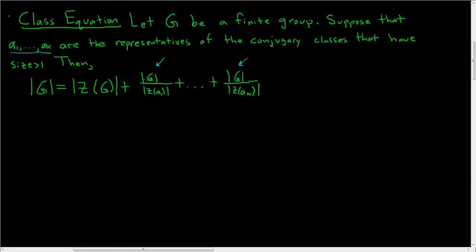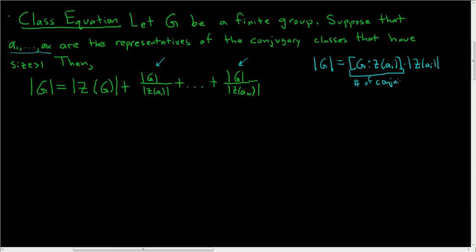These are the orders of the conjugacy classes whose size is greater than 1. Recall that the order of G is equal to the index of the centralizer of an element A sub i in G times the order of the centralizer. We showed in a previous video that this is the number of conjugates of A sub i. So dividing both sides by the order of the centralizer, the index equals the order of the conjugacy class of A sub i.